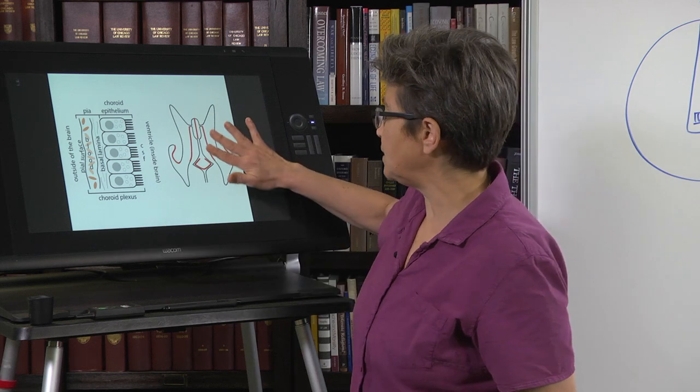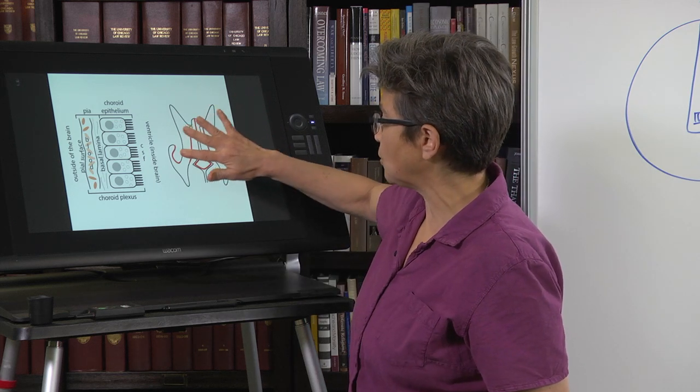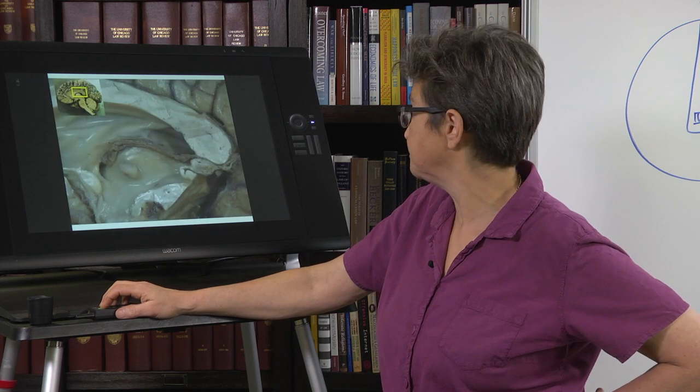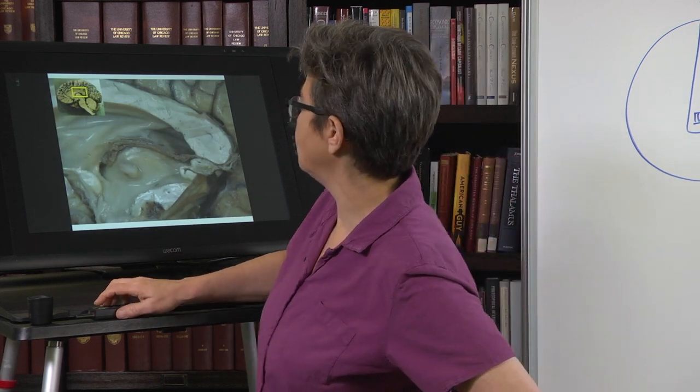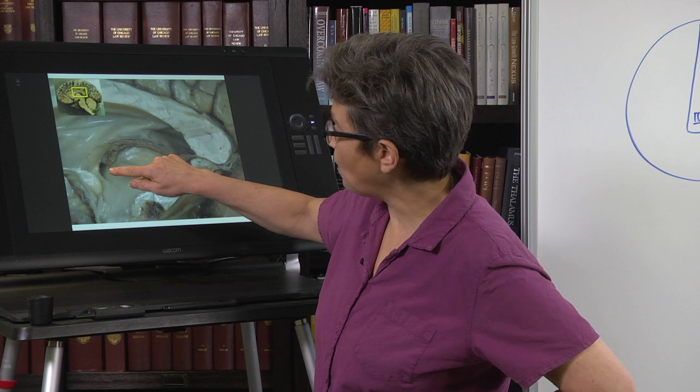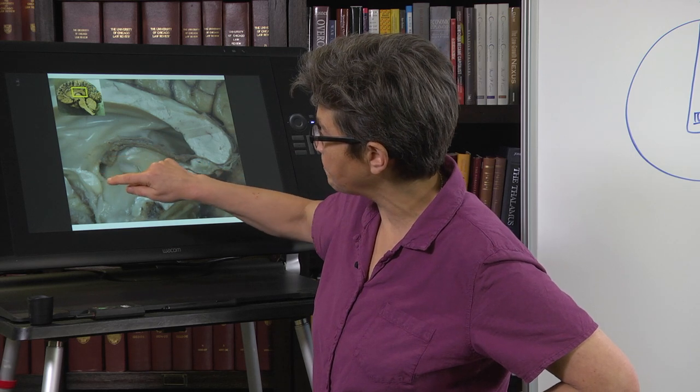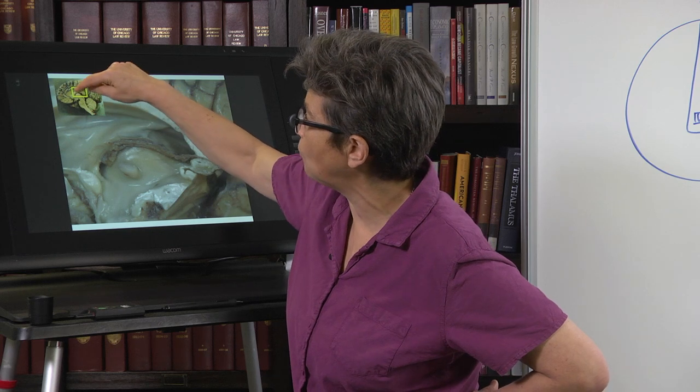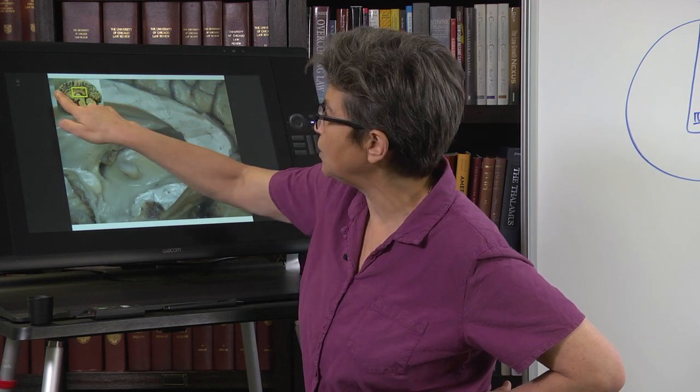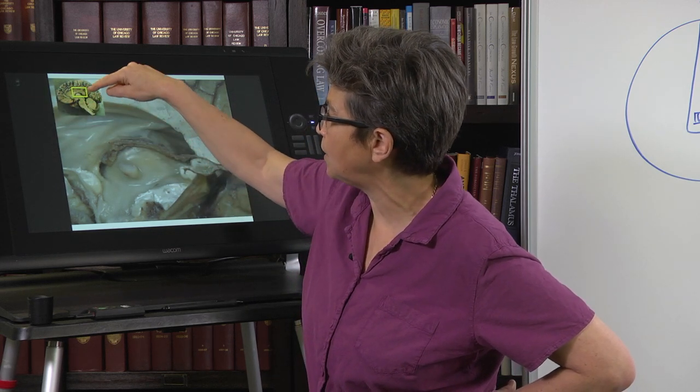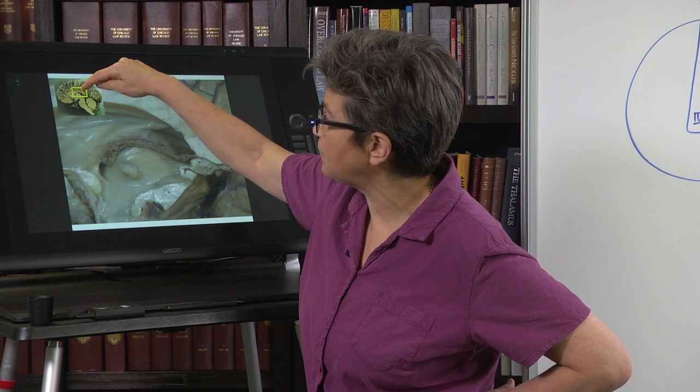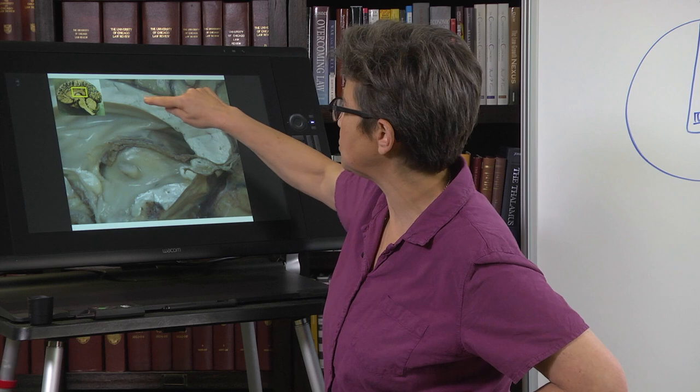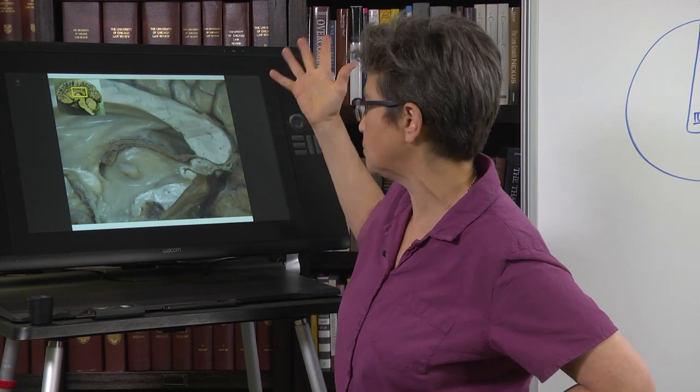So these places where CSF is generated are going to pump out a lot of CSF every day. Let's just take a look at what this looks like. Here you have, okay, so where are we looking? We're looking at a blow up of around this area. Here's the front of the brain. Here's the back of the brain. Here's where the diencephalon meets the telencephalon. We haven't talked about this structure here, but it's the corpus callosum. We'll get to it.